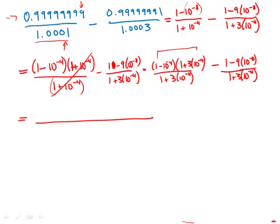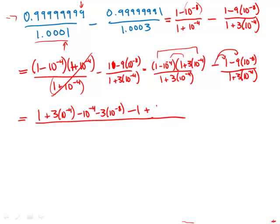I'm going to FOIL this out. The product of the first terms, one times one, is one. The product of the outer terms is one plus three times ten to the negative fourth. The product of the inner terms is negative ten to the negative fourth. The product of the last terms is negative three times ten to the negative eighth. Then from the second fraction, I have to remember to distribute the negative sign, so I get a negative one and a positive nine times ten to the negative eighth. This whole expression is over the common denominator of one plus three times ten to the negative fourth.